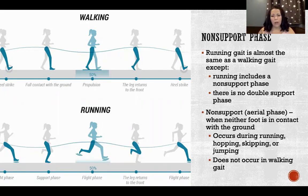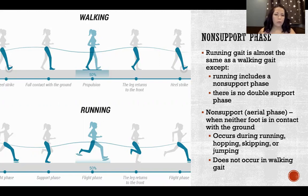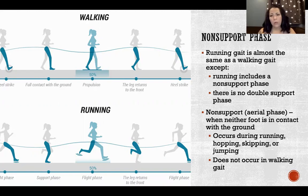In running we have an overlap of when both legs are in swing, as opposed to in walking where we have an overlap of when both legs are in stance. So running gait overall is almost identical to walking gait, except that running includes a non-support phase and there is no double support phase.